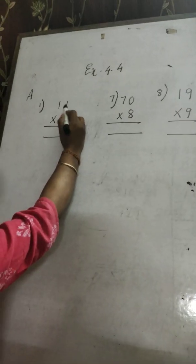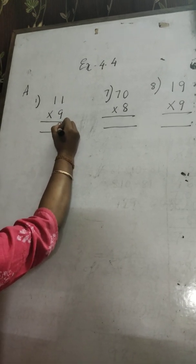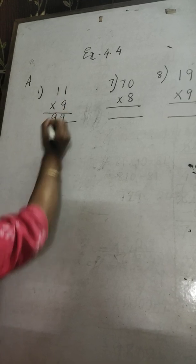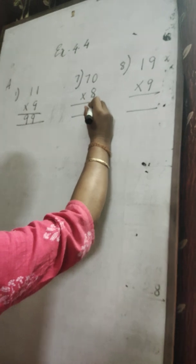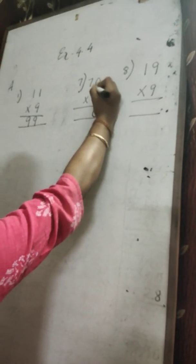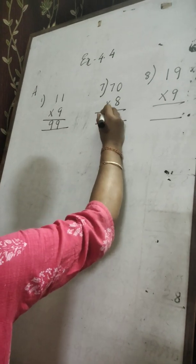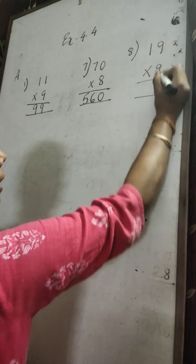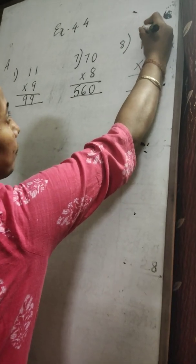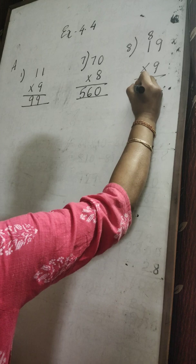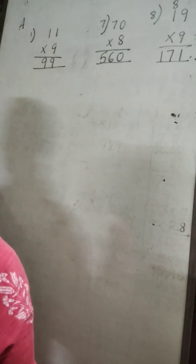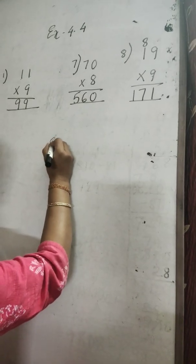First you multiply 9 with the number in the ones place — 9 ones are 9. Then with the tens place — 9 ones are 9. Now multiply 8 with the ones place — 8 zeros are 0. Then 8 sevens are 56. Next: 9 nines are 81 — write 1 in the right and carry 8. Then 9 ones are 9 plus 8 is 17. So I have shown you how to multiply a two-digit number by a one-digit number.